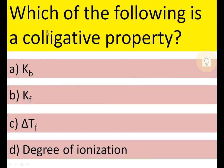Next question: which of the following is a colligative property? Kb, Kf, ΔTf, or degree of ionization. Degree of ionization is not a colligative property, and Kb and Kf are constants — not the property itself. Where there is a difference or change, that should be the colligative property. Therefore, ΔTf is the correct option.